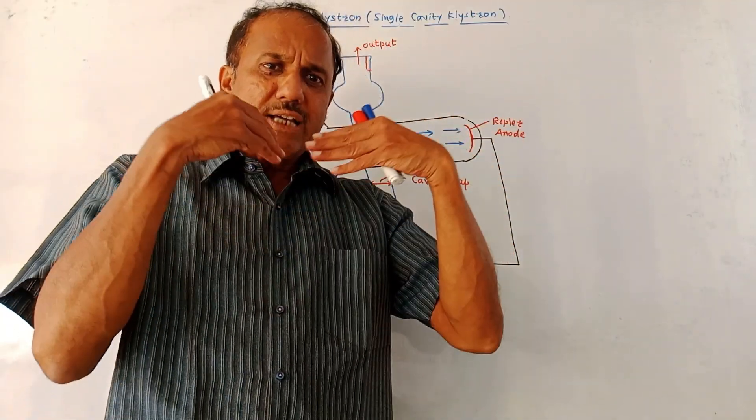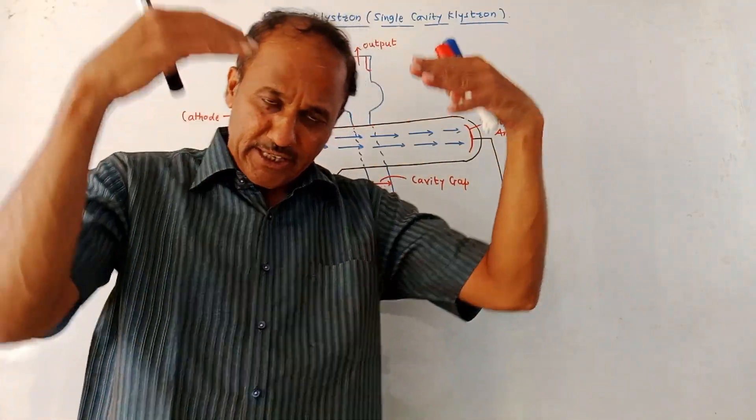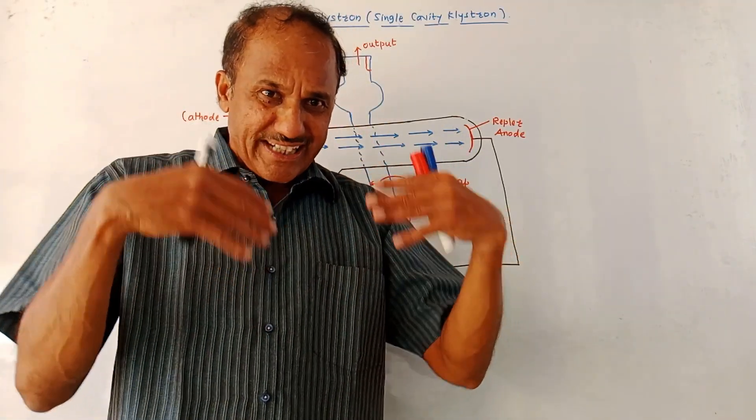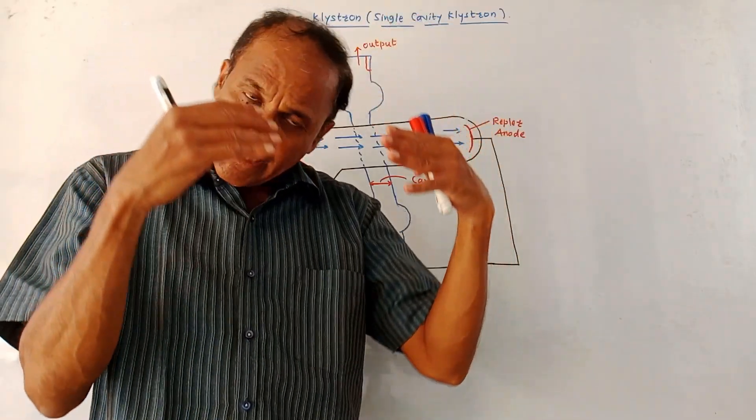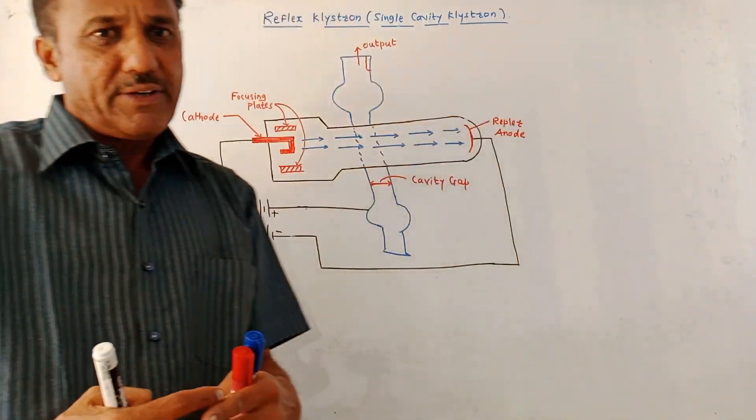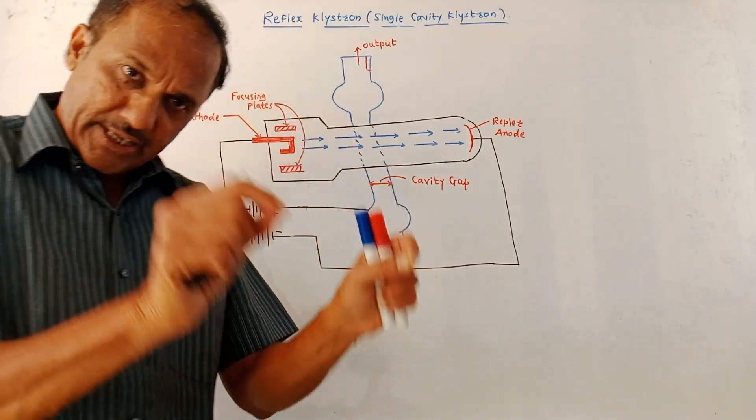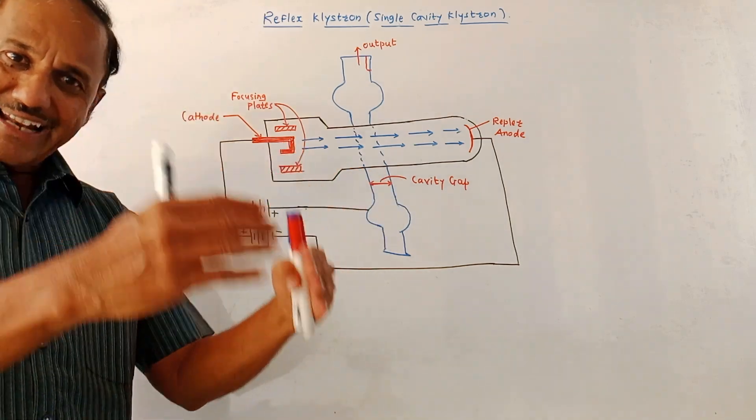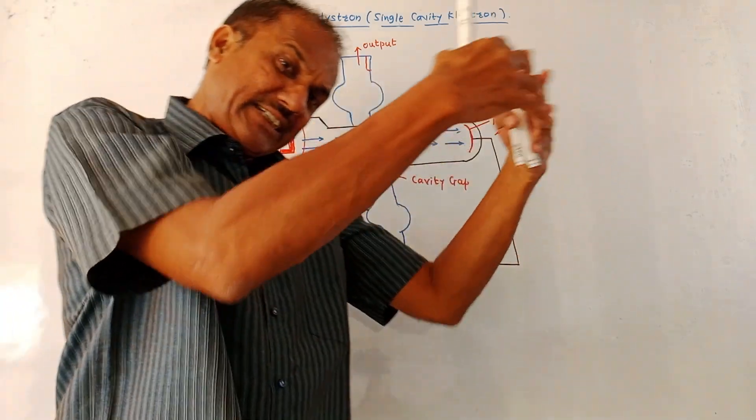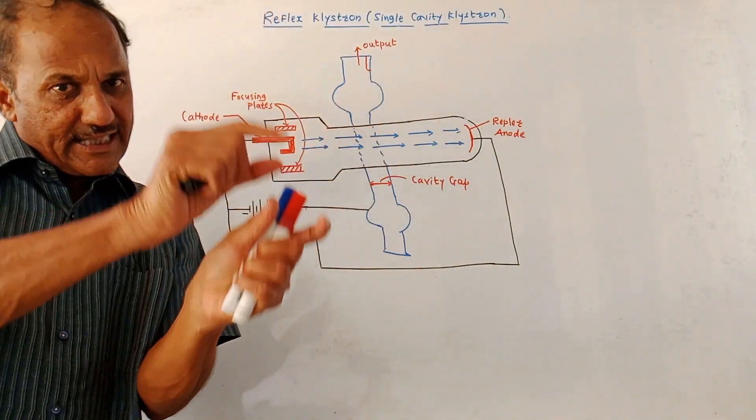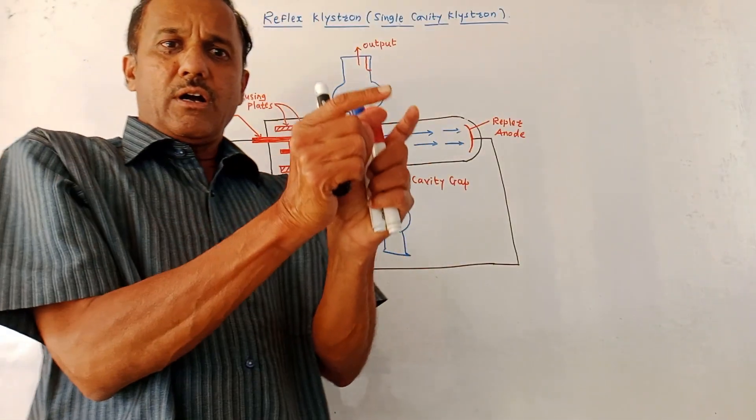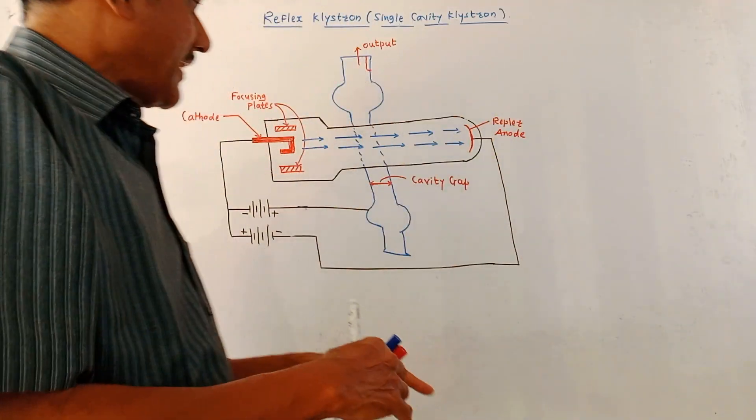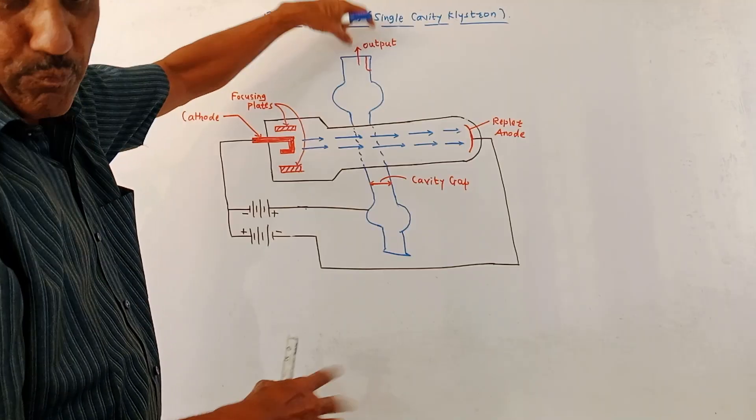Now, the electrons which are getting accelerated, that means the electrons entering when the cavity gap is positive, are taking energy from the cavity. Whereas some electrons are entering when the cavity gap voltage is negative and getting retarded, they also take energy from the cavity. This give and take action of energy from the cavity is maintained, which produces sustained oscillations in the cavity and the output is generated from this point.